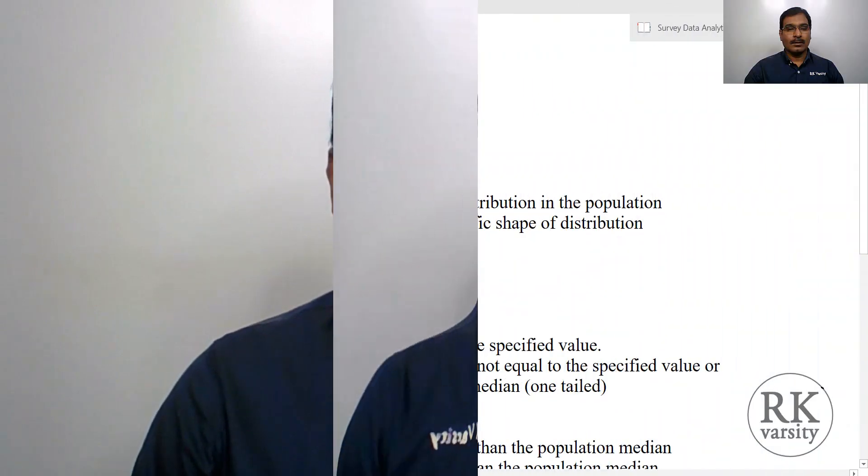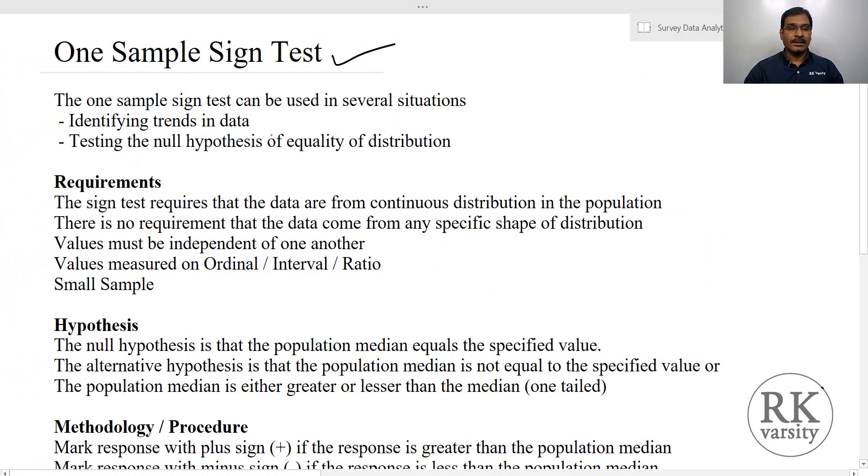When you collect data using an ordinal scale, interval scale, or ratio scale, and when you wish to identify the trends in data or to assess the null hypothesis of equality of a distribution, then you need to use one sample sign test. In this lecture, I will show you how to calculate one sample sign test using IBM SPSS with two examples. One sample sign test is used in several situations like identifying trends in data or testing a null hypothesis of equality of a distribution.